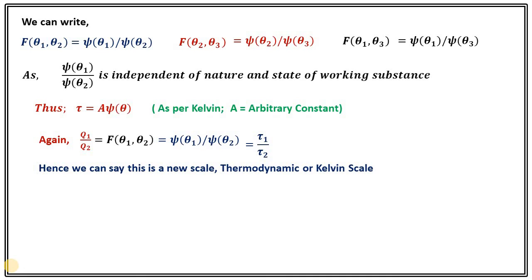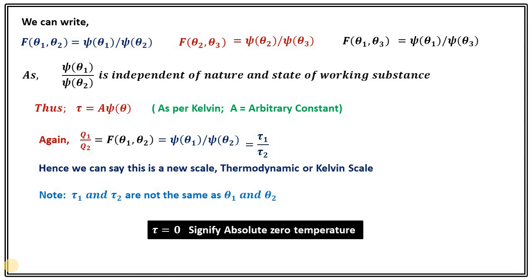That is why we know there are three units of temperature: Celsius, Fahrenheit, and Kelvin. Note that τ is not the same as θ. Also, τ = 0 signifies absolute zero temperature. A negative value of τ is not possible, because it would make the efficiency of the reversible engine negative, which is not physically possible. So τ = 0 is absolute zero, and this new scale is called the thermodynamic or Kelvin scale of temperature.